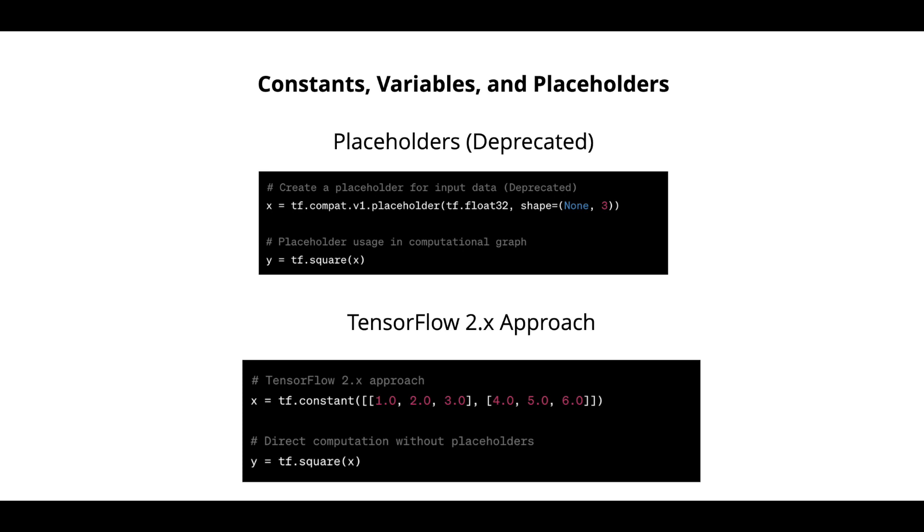Now just to go over this again, constants are immutable tensors with fixed values commonly used for representing constant values in models. Variables are mutable tensors whose values can be modified during execution, typically used for model parameters that need to be learned.